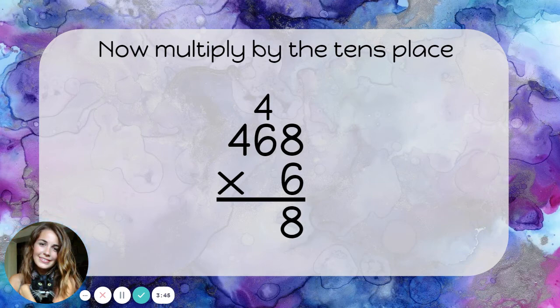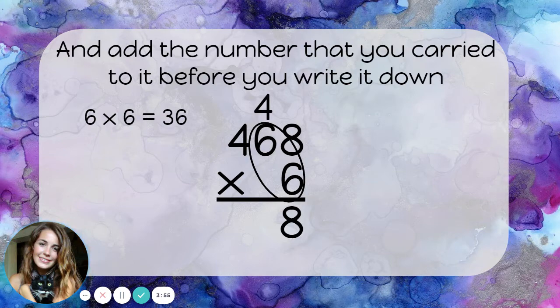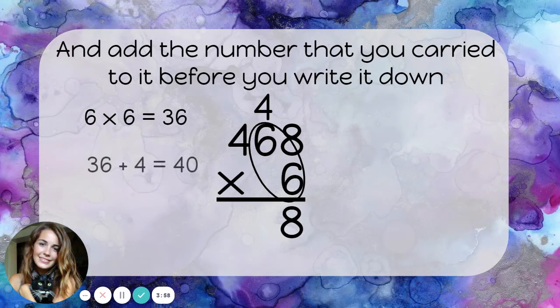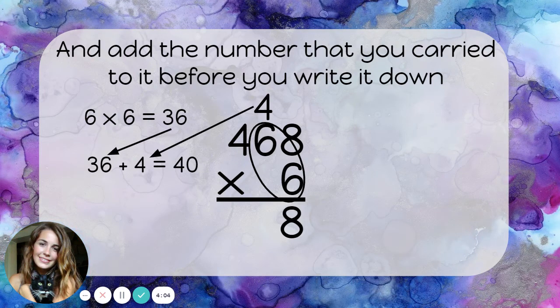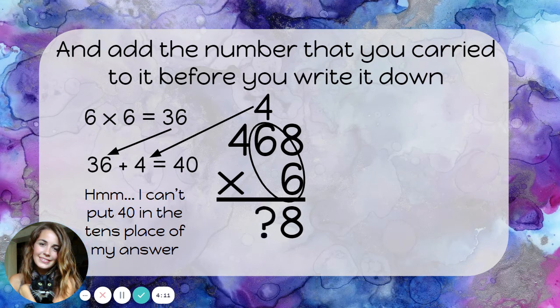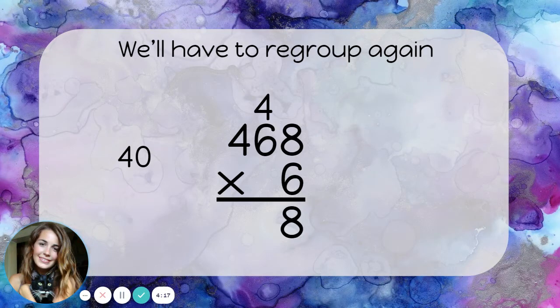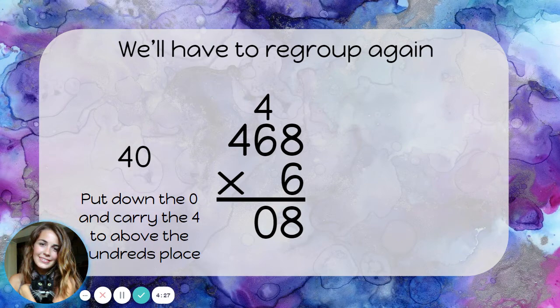Now, let's multiply the tens place. 6 times 6 is 36. But I know before I write that down, I'm going to have to add that number that I carried, that 4. So, I have 36 plus the 4 that I carried. That's 40. I can't put a 40 in the tens place of my answer. Remember that each place only holds one digit. We'll have to regroup again. I have 40. I can put the zero down and carry the 4 up above the hundreds place. 40 tens is really four hundreds.